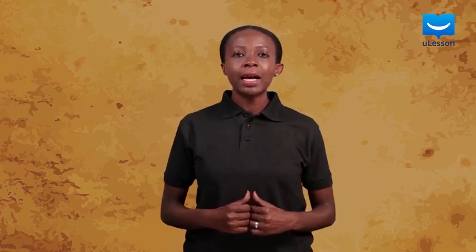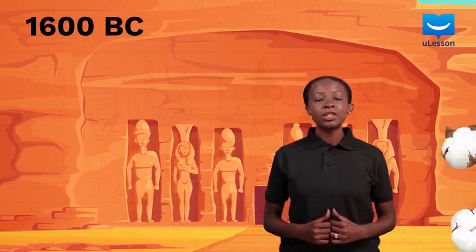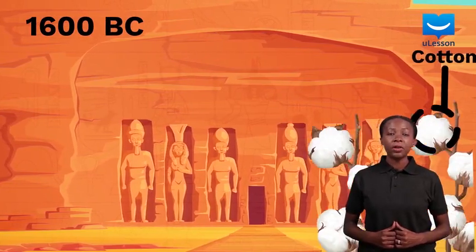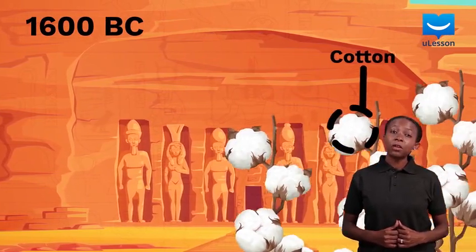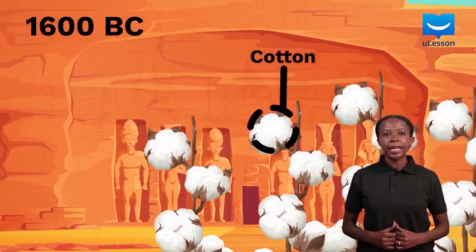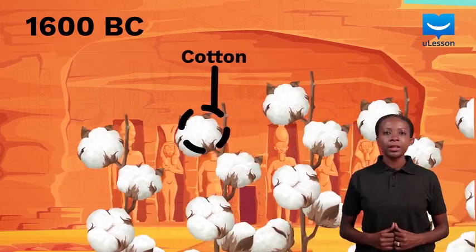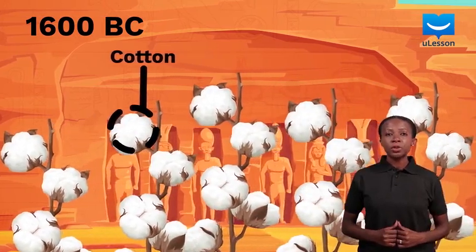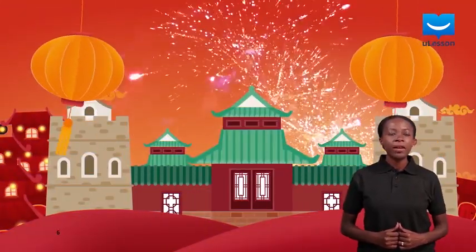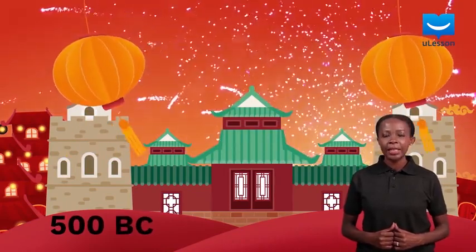The origin of the practical uses of sulfur can be traced to the Egyptians as early as 1600 B.C. The Egyptians used a compound of sulfur known as sulfur 4-oxide for bleaching cotton. Sulfur was also used for making fireworks around 500 B.C. in China.